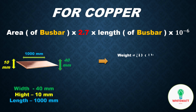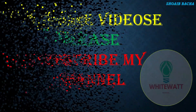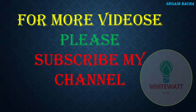For copper bus bar weight: 40 multiplied by 10 multiplied by 2.7 — where 2.7 is the density factor of copper — multiplied by 1000 multiplied by 10 to the power of negative 6. The answer becomes 1.08 kg. Now you know how to calculate the weight of a bus bar. For more videos, please subscribe to my channel. Thank you.